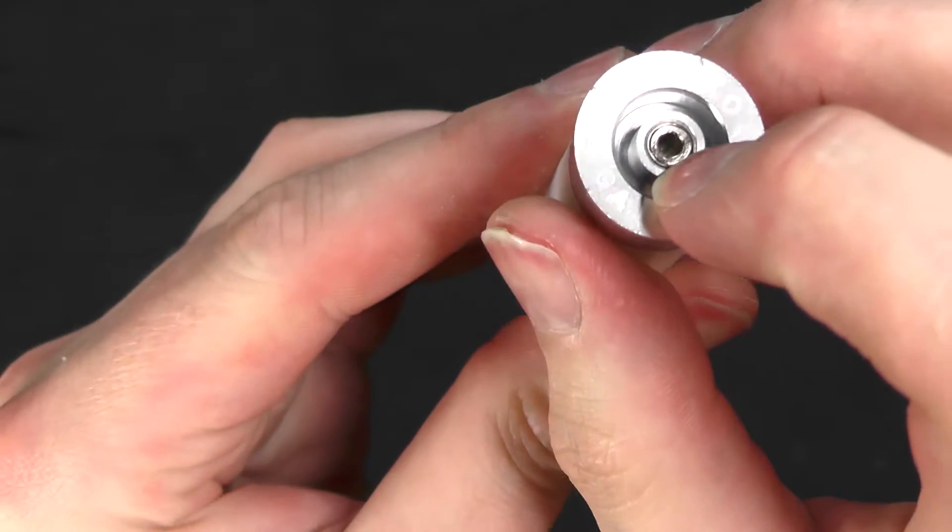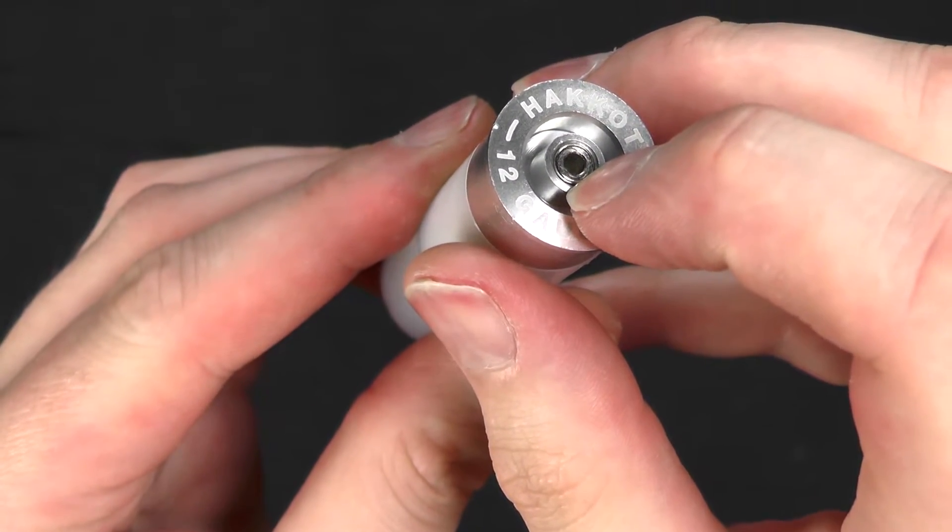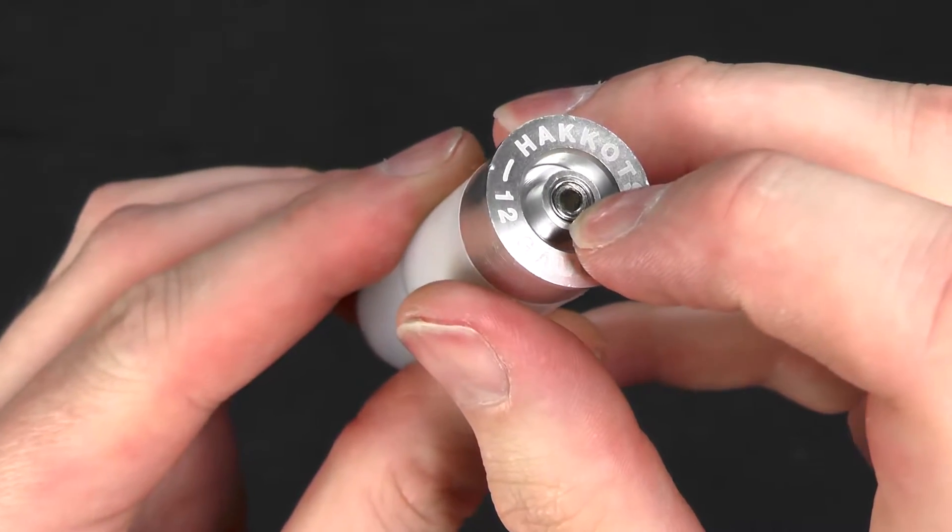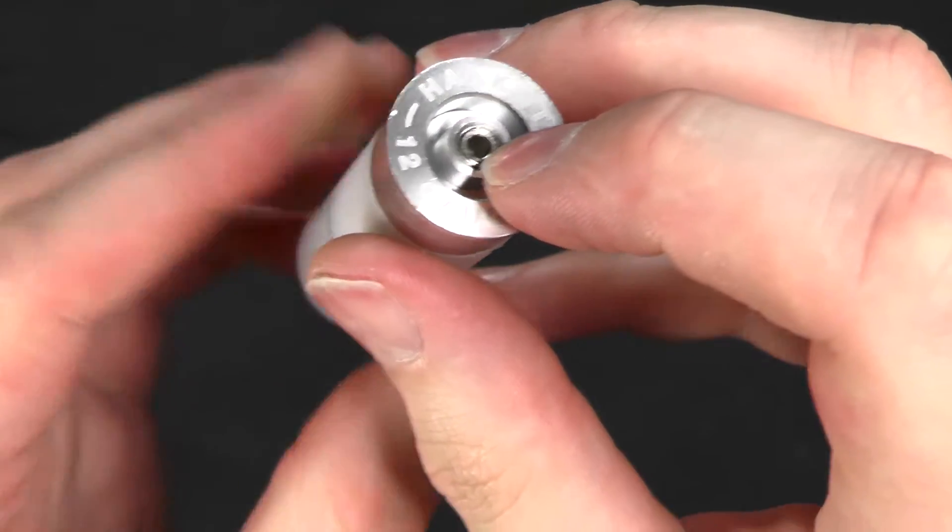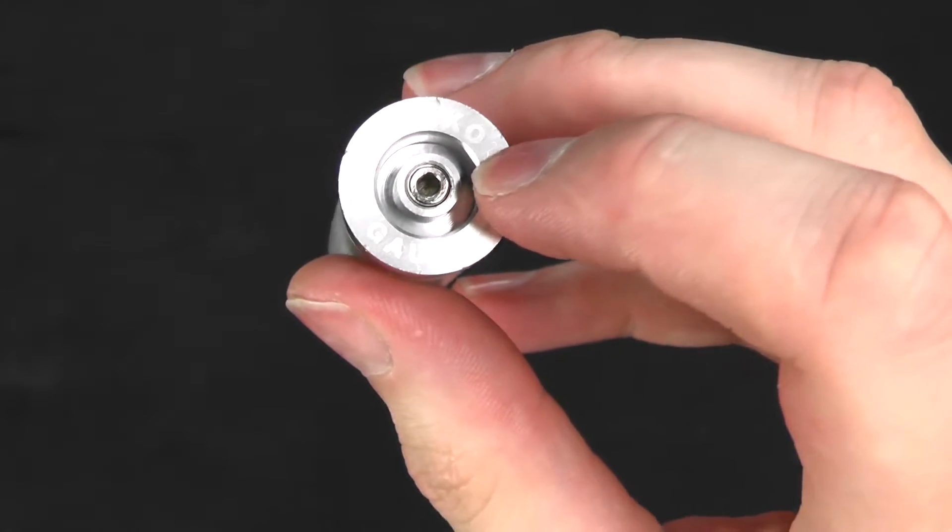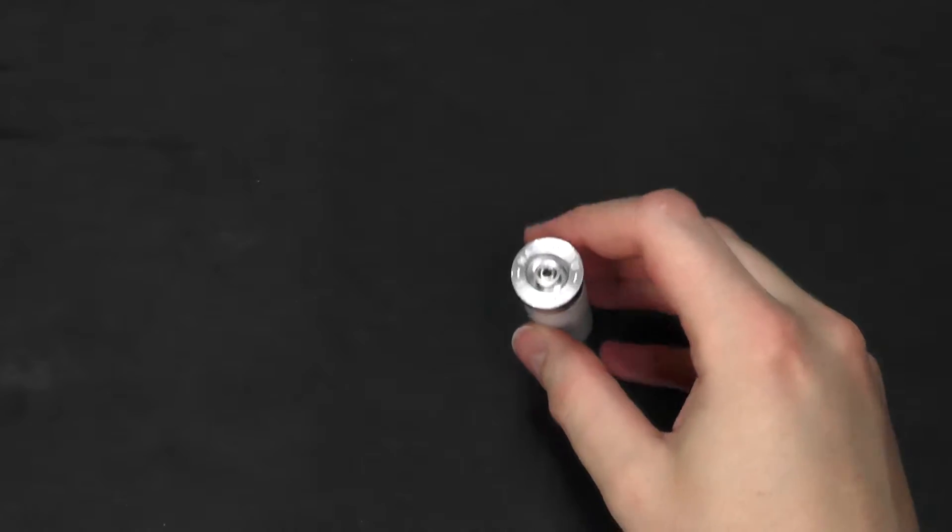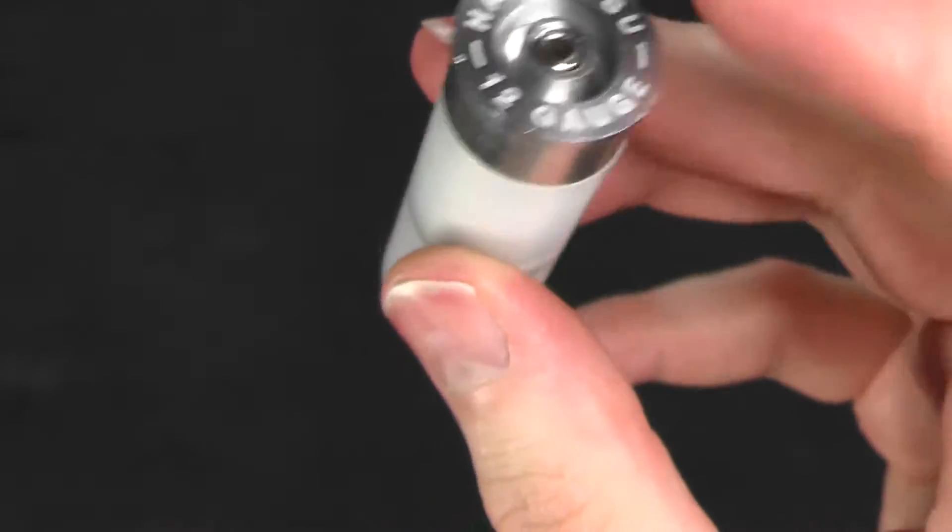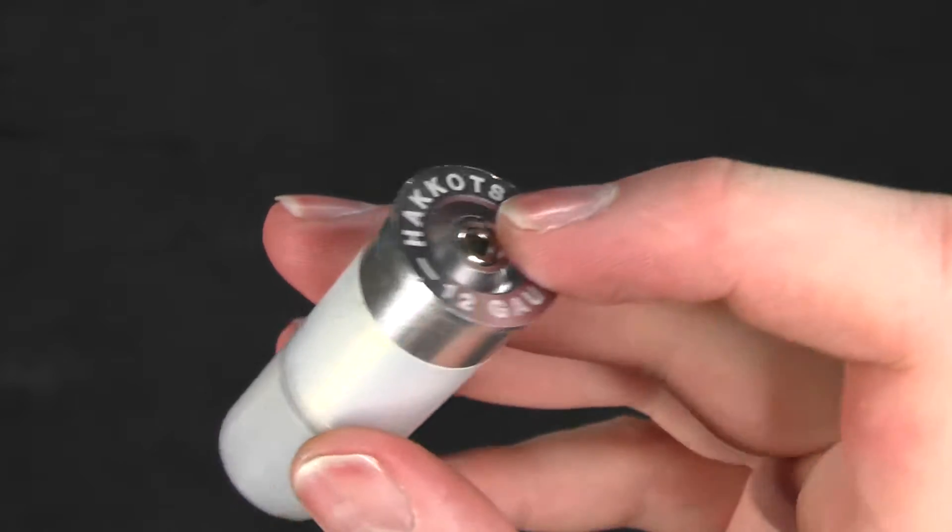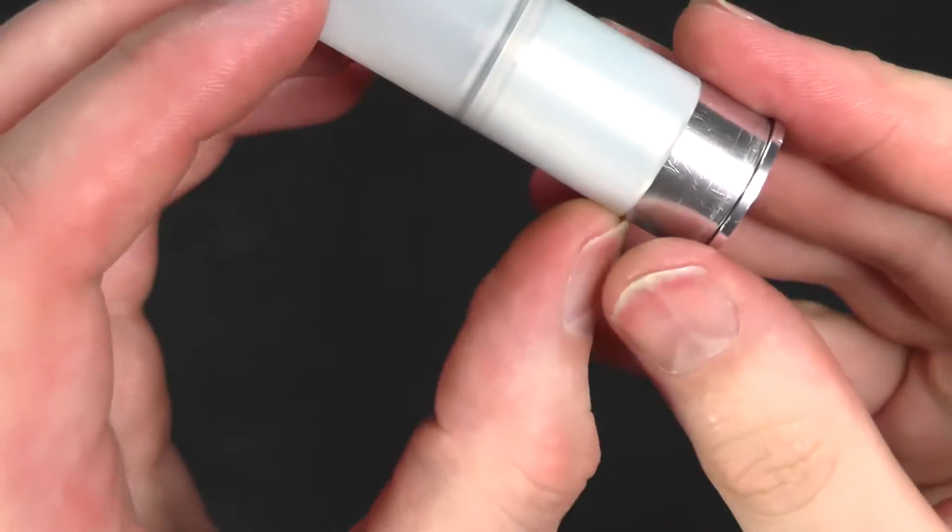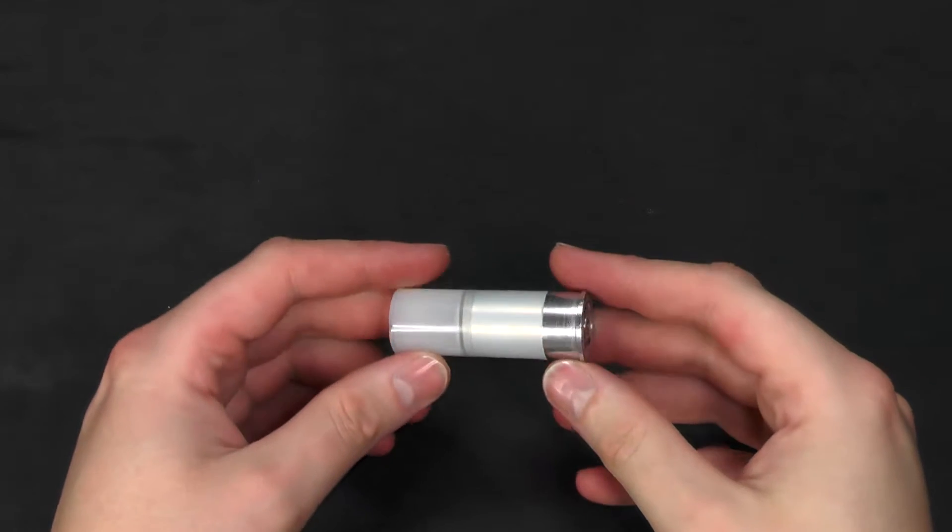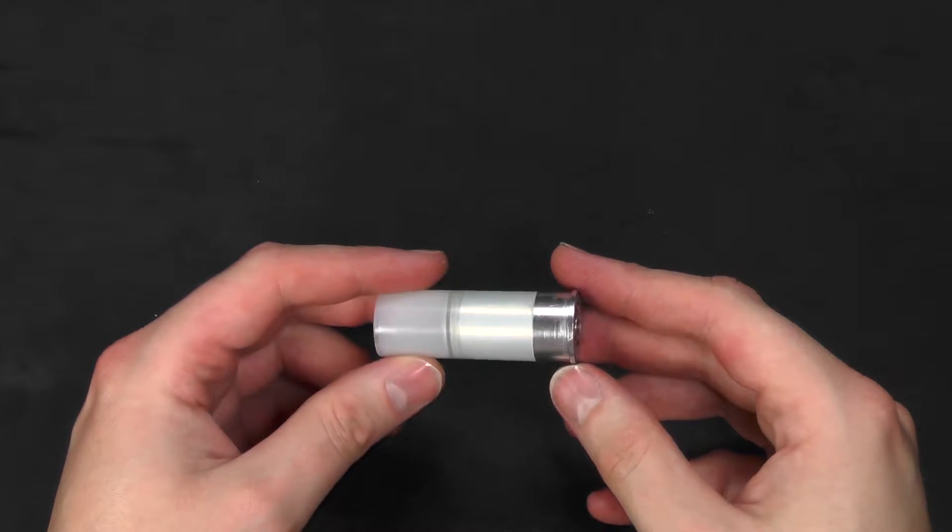We have the plunger or valve stem right here. I like to call this the firing pin as well, or I'm sorry, the primer. And then we have the plastic body up here. So basically to get this apart, there are a couple of steps that you have to do.